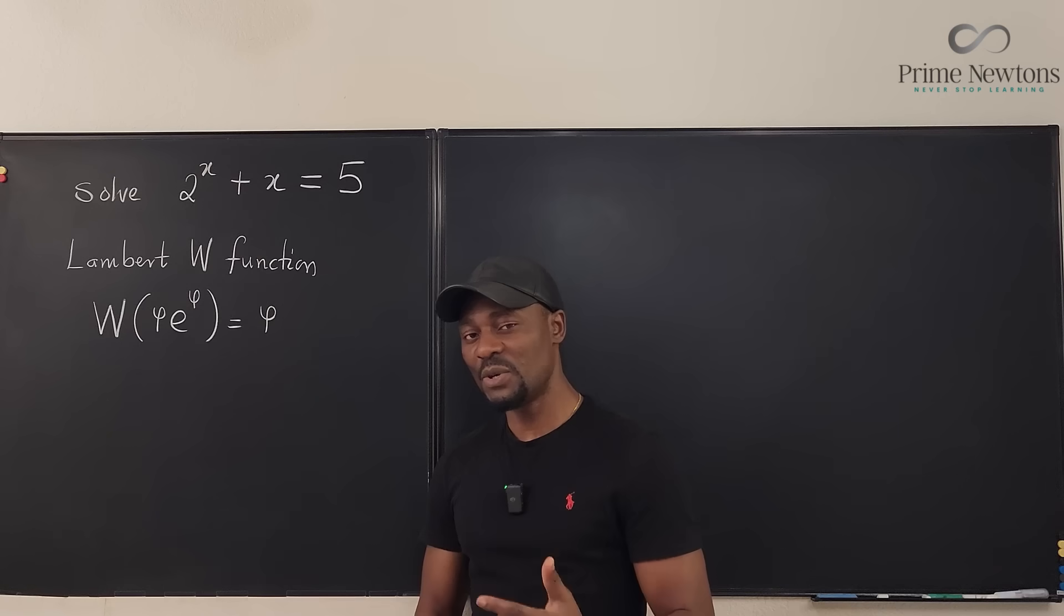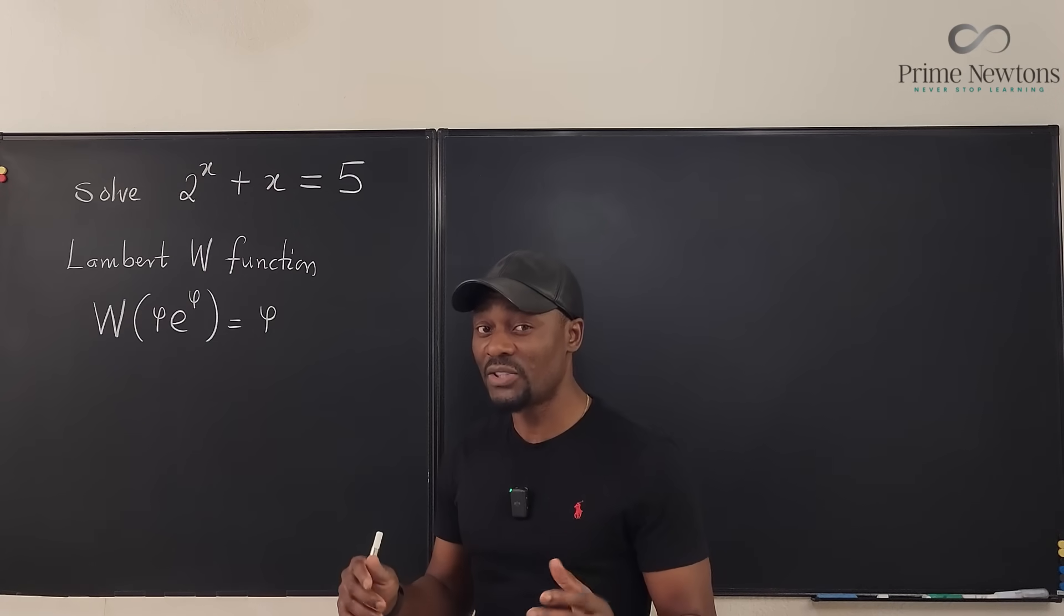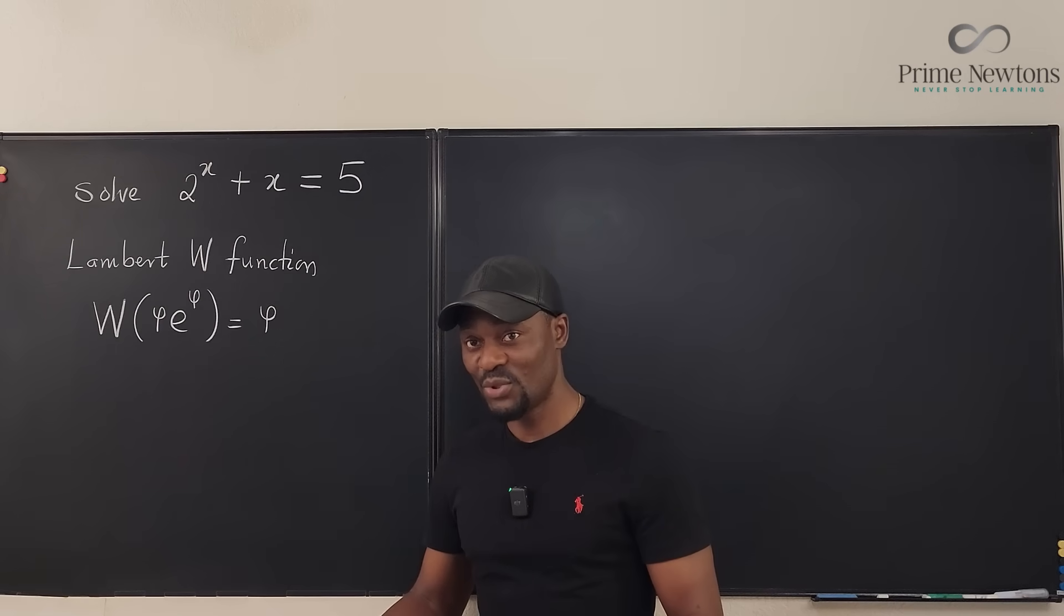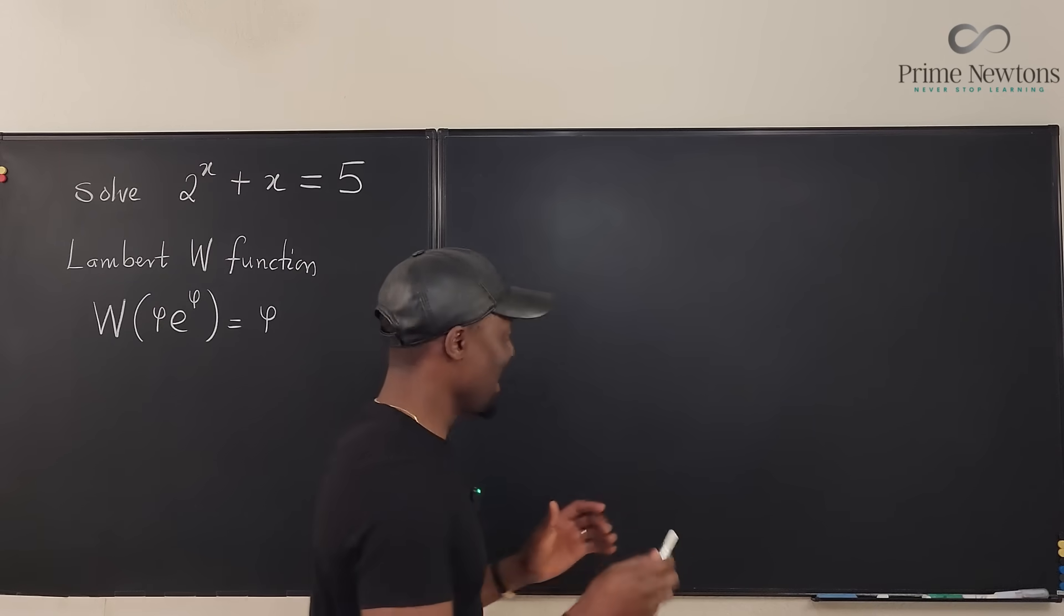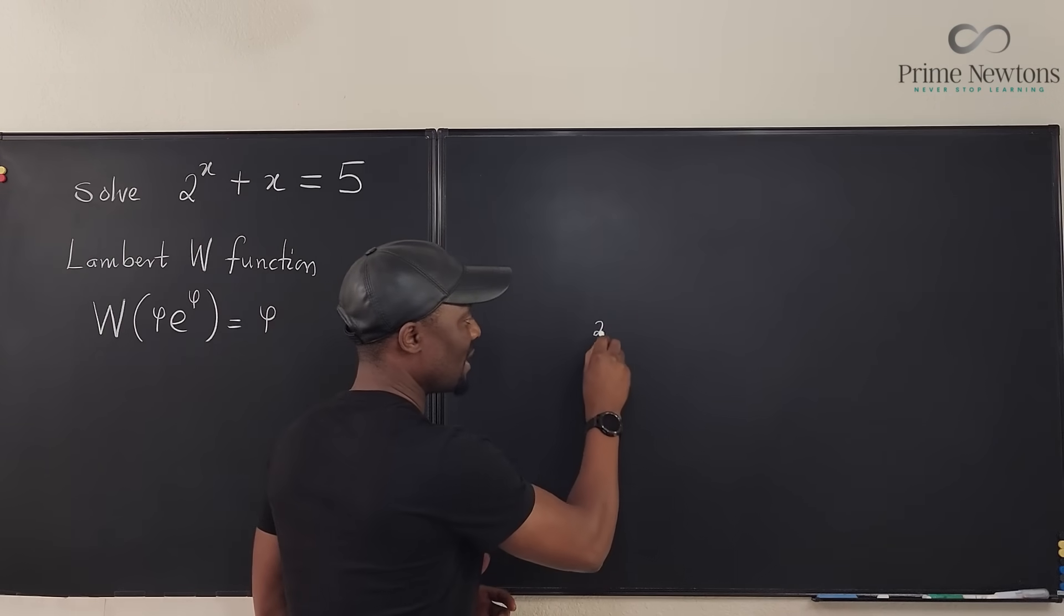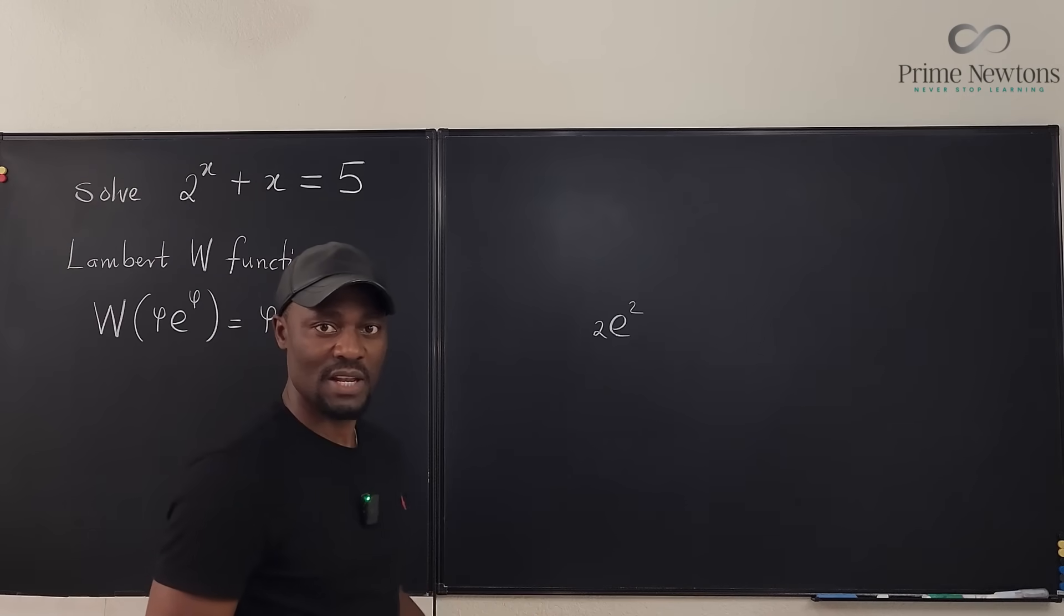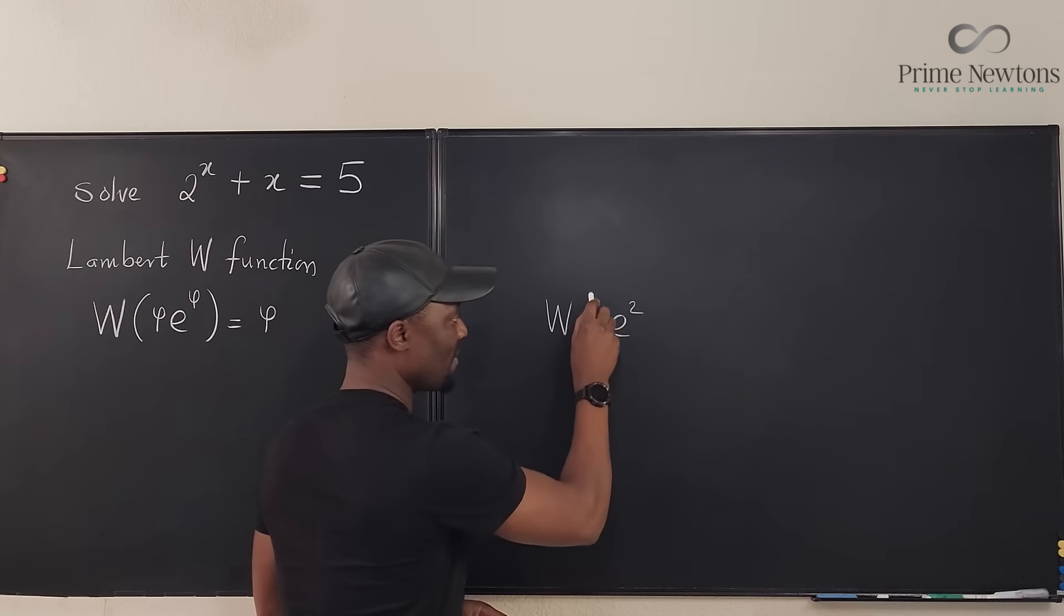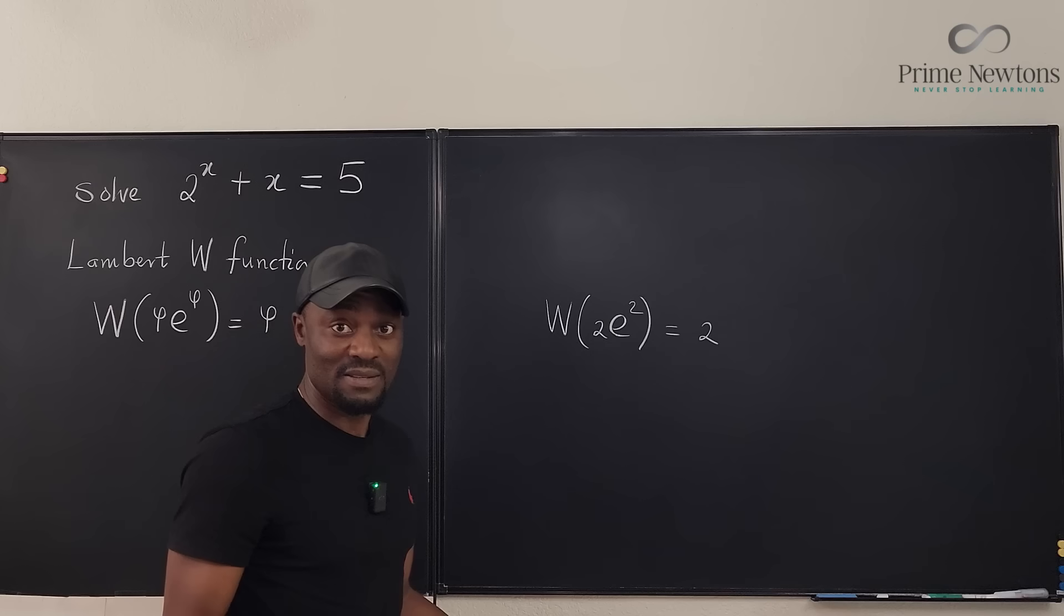This is the Lambert W function. And all it does is it undoes the product of a number with its exponential expression. So what does this mean? This just means that if I told you there's a number 2, and I multiply it by e^2, if I plug this into W, my answer is going to be 2. That's what it means.